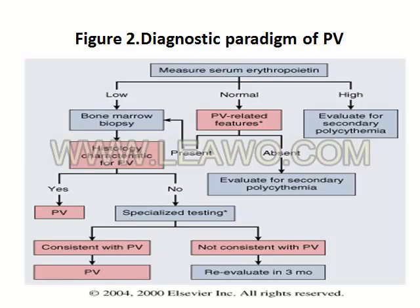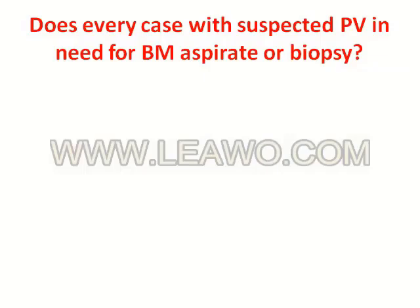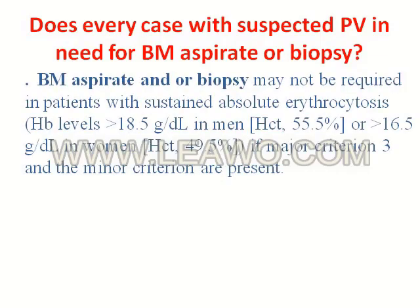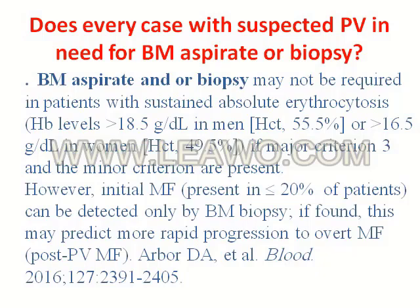If serum erythropoietin is normal, there are two possibilities. If polycythemia vera-related features such as splenomegaly are present, manage as if the patient has low serum erythropoietin. If these related features are absent, this is most probably secondary polycythemia. Does every suspected case of polycythemia vera require bone marrow aspirate or biopsy? The answer is yes, because it could be confused with the initial cellular or pre-fibrotic phase of myelofibrosis.